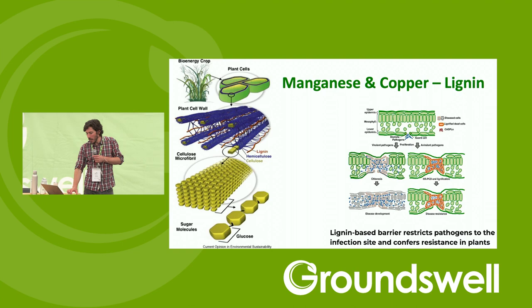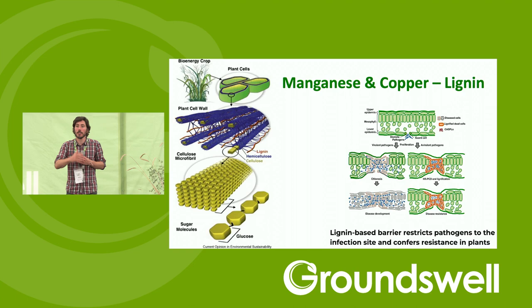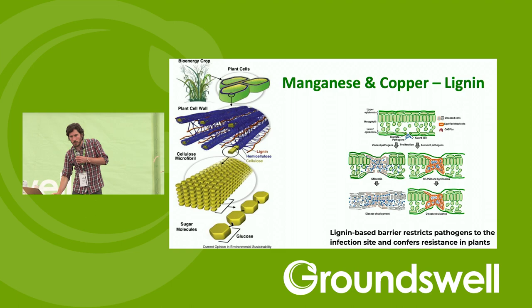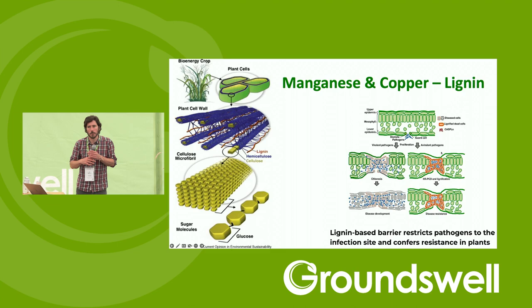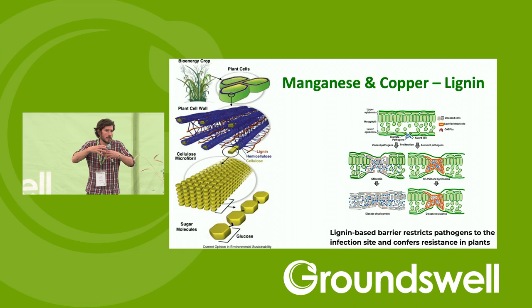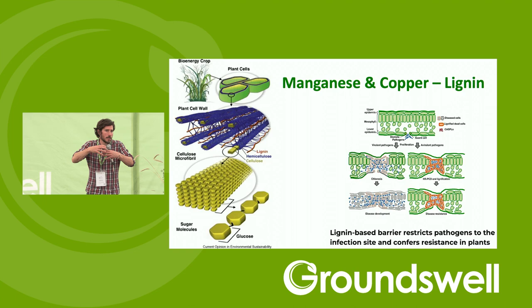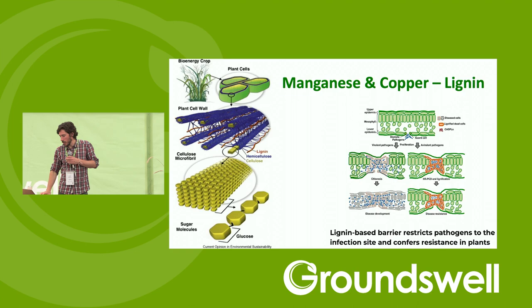Manganese and copper both play a very important direct role in lignin synthesis — this is what helps the structure of the plant prevent lodging, and it's also the same compound that forms part of the skin of the plant, making it more difficult for pathogens and insects to chew through. The more lignified the plant, the greater the enhancement of the structural barrier and structural resistance against insect pests.